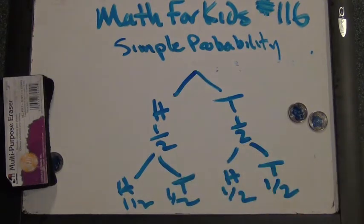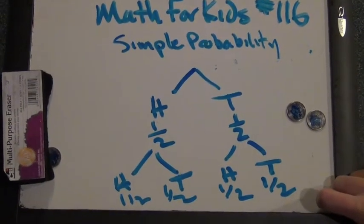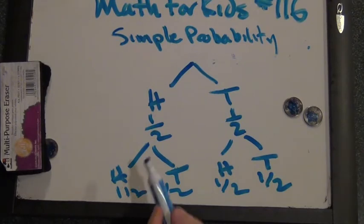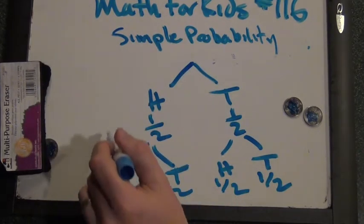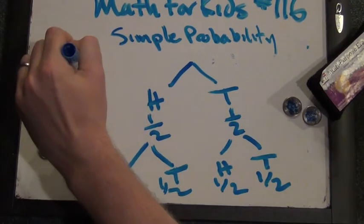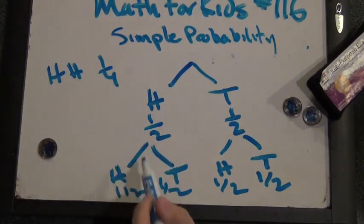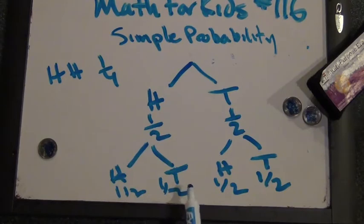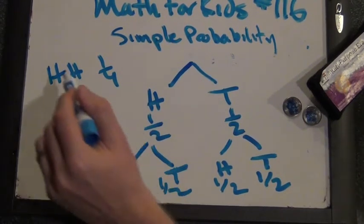Should probably make sure that's on screen. So it looks like one-fourth of the time, half of half the time, we're gonna get two heads. Head-heads is one-fourth. Heads-tails is one-fourth, because again, it's half of half the time.